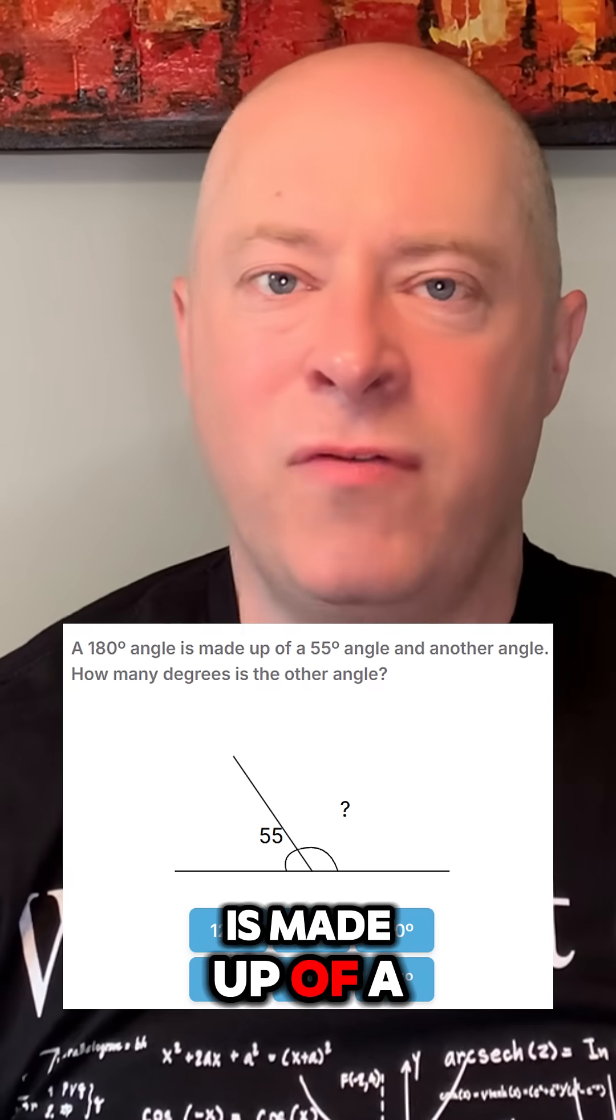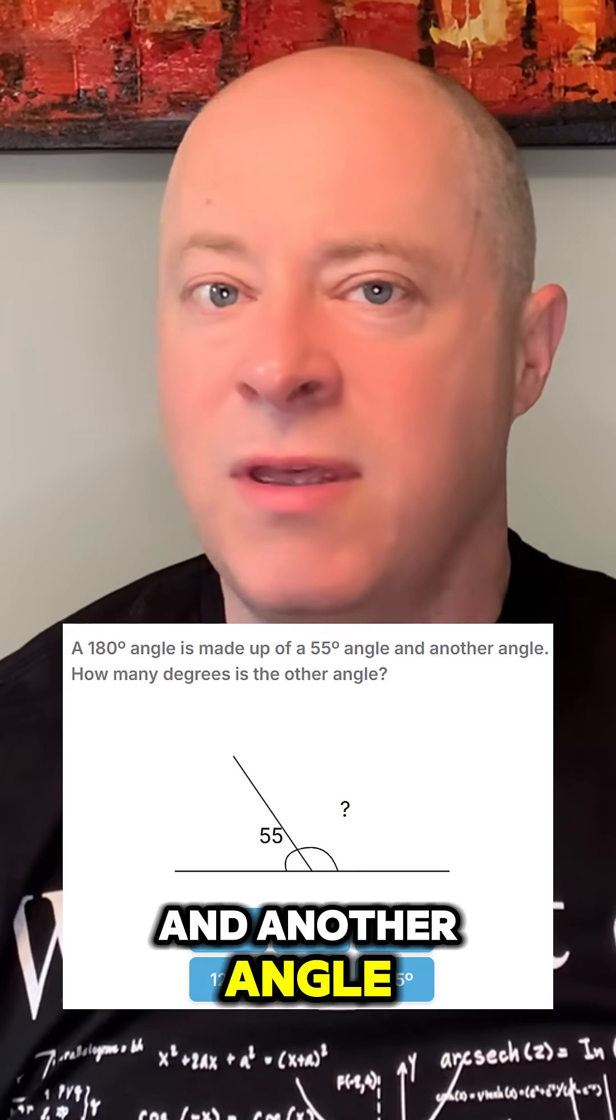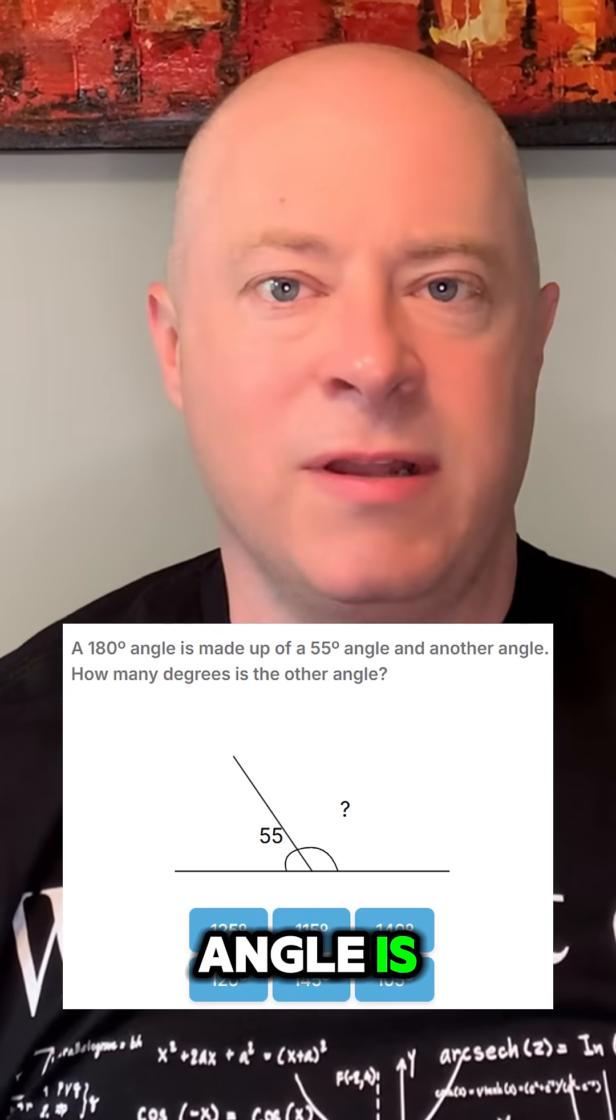If a straight line is made up of a known angle and another angle, how can we figure out what that other angle is?